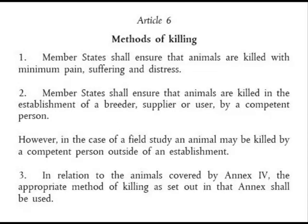Part two reads: member states shall ensure that animals are killed in the establishment of a breeder, supplier or user by a competent person. However, in the case of a field study, an animal may be killed by a competent person outside of an establishment. Part three reads: in relation to the animals covered by Annex 4, the appropriate method of killing as set out in that annex shall be used. So let's have a look at Annex 4 now.